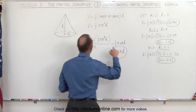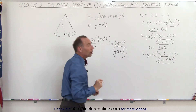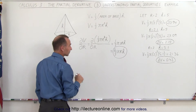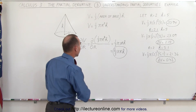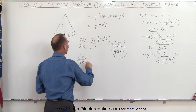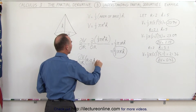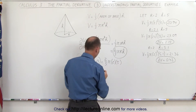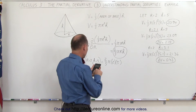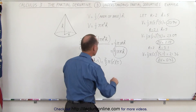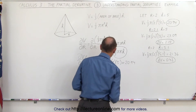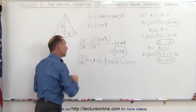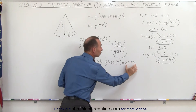Now we'll evaluate this derivative. We find ΔV/Δr at r = 2 and h = 5. That gives (2/3) × π × 2 × 5, which is 20/3 × π, equal to 20.94. This means if r changes by one unit (with h constant), the volume changes by 20.94 units.